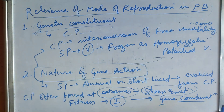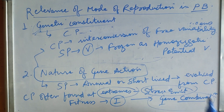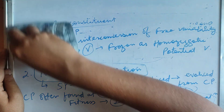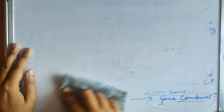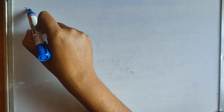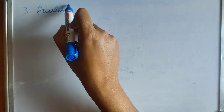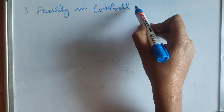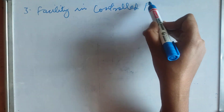This covers the nature of gene action — what kinds of genes and gene combinations are present in different species. Moving on to the third point: facility in controlled pollination.